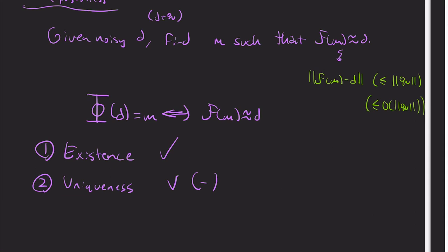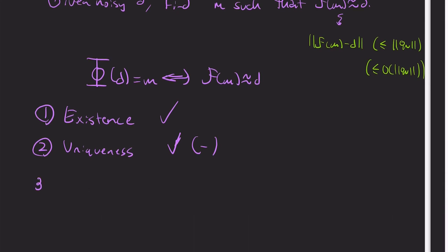So typically we have existence. So well-posedness has three conditions. We typically have uniqueness, but I put a minus here because sometimes you might not even have uniqueness. But for the most part we can say, okay, well we have existence and uniqueness